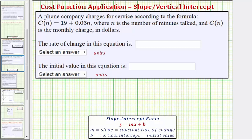In general, when we have a linear equation in slope-intercept form with the form Y equals MX plus B, M, the coefficient of X, is equal to the slope, which represents the constant rate of change, and B, the constant term, is equal to the vertical intercept, which represents the initial or starting value.